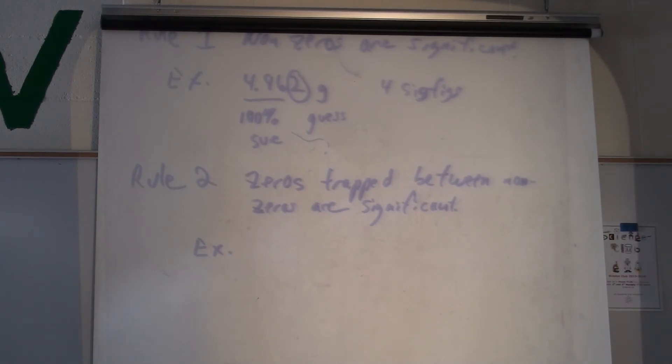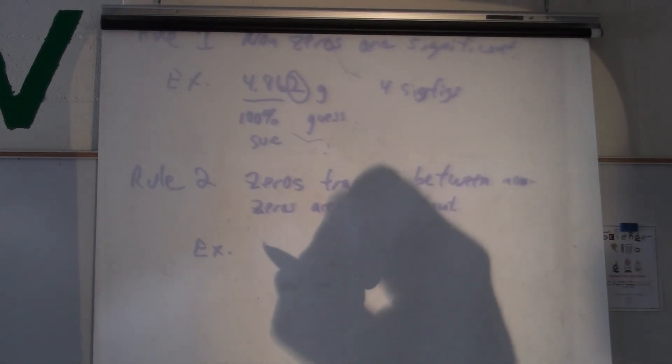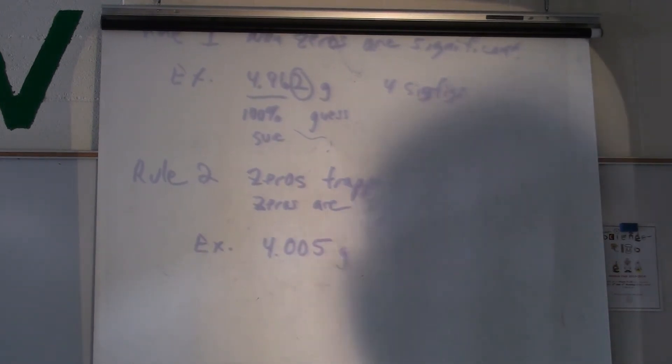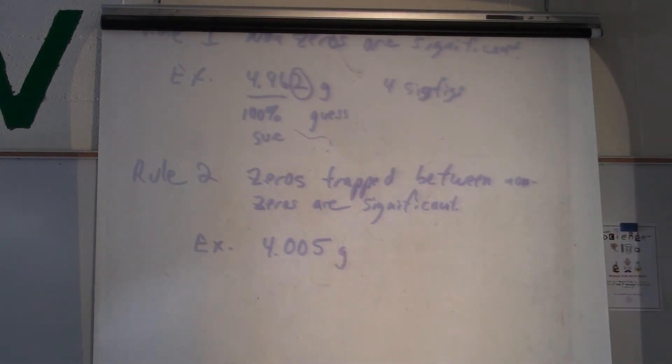So you have to go weigh out some copper Kateri. And so you go to the balance, put some copper metal on your balance, and your balance reads this. 4.005 grams.